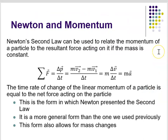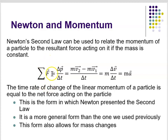So we talked about in a previous lecture Newton's second law as F equals ma, the mass times the acceleration, and F is the force. But Newton's second law can be used to relate the momentum of a particle to the resultant force acting on it if the mass is constant. In terms of this expression, the net force, or the sum of the forces — and remember force is a vector — is going to be equal to the change in momentum delta p over the change in time delta t.